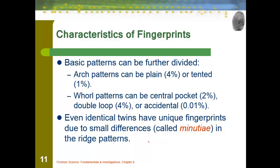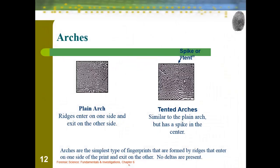Breaking them down into basic patterns: arches can be either plain or tented. A plain arch just moves up slightly and back down — just a little bit of rise. A tented arch has a larger, sharper spike up and back down. Even identical twins have small differences between them — the minutiae — so their ridge patterns are different, meaning even identical twins have different fingerprints.